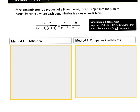So here we have (6x−2)/[(x−3)(x+1)]. The denominator is a product of two linear terms — (x−3) is linear and (x+1) is linear — so we can write it as A/(x−3) + B/(x+1), where A and B are constants we need to find. We can find A and B using two methods: substitution or comparing (equating) coefficients.